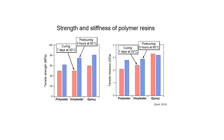Here, the comparison of strength in terms of tensile strength and stiffness in terms of tensile modulus of different polymer resins employed in wind turbine blade construction has been shown. These resins are polyester, vinyl ester and epoxy. The results show that a post-curing of 5 hours at 80°C improves the properties of the materials, except for the tensile modulus in the case of epoxy resins.